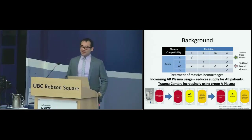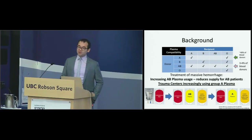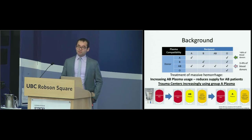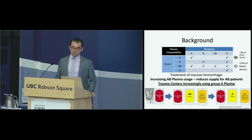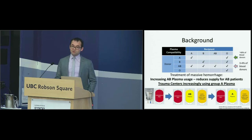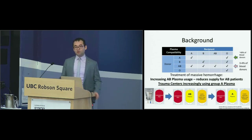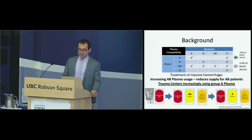Dr. Andrew Beckett already went through this slide, but just to give a little background: many of you know that O red blood cells are the universal donor for red blood cells, but for plasma, the universal donor is group AB. All patients can receive group AB Plasma, but AB patients can only receive group AB Plasma. This is potentially an issue because in massive hemorrhage, we're now starting to use not just red blood cells and crystalloid, but a balanced ratio of red blood cells, plasma, and platelets.